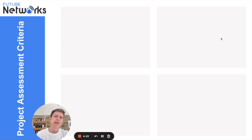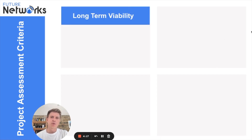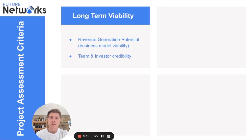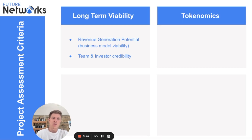Now let's get into the final part: how to assess DePIN projects and the criteria we use. This isn't a totally exhaustive list, but it covers the most important points. First: long-term project viability — probably the most important factor. What is the revenue generation model? What's the potential for the company to successfully generate revenues long-term? How viable is the business model? Then look at the team and investors to see how credible they are, as the team is a huge factor in whether the project succeeds.